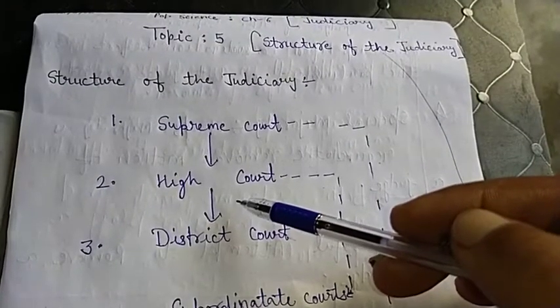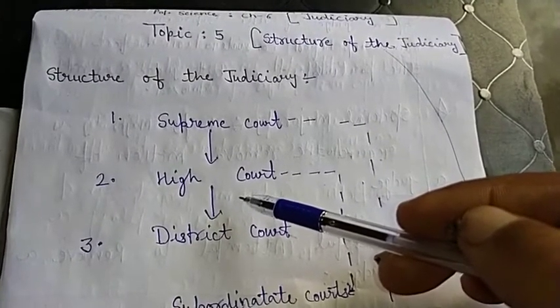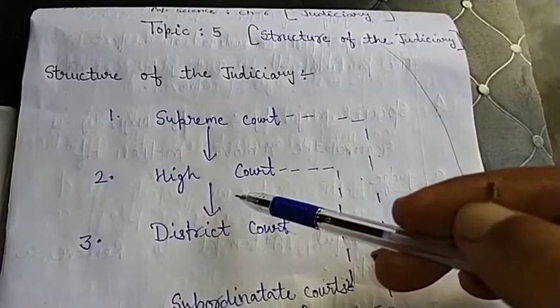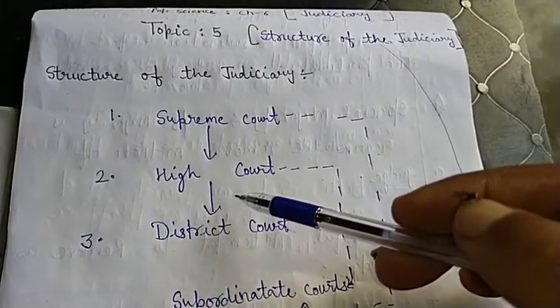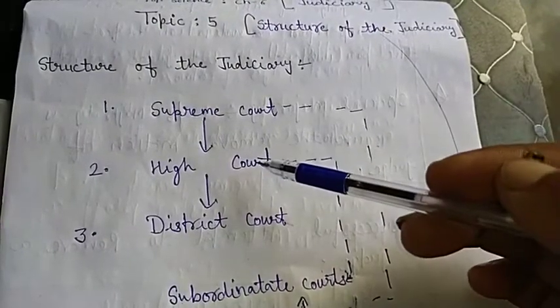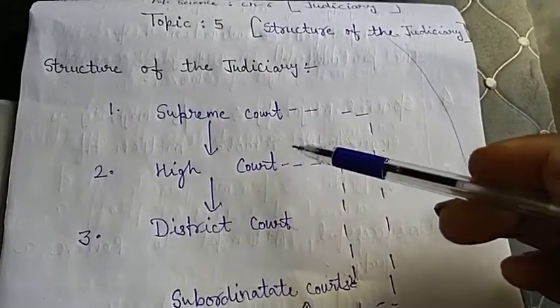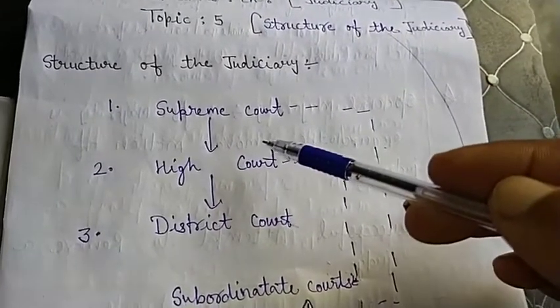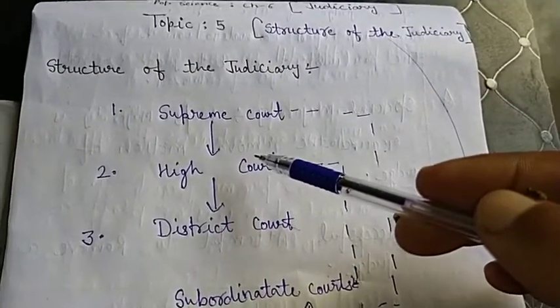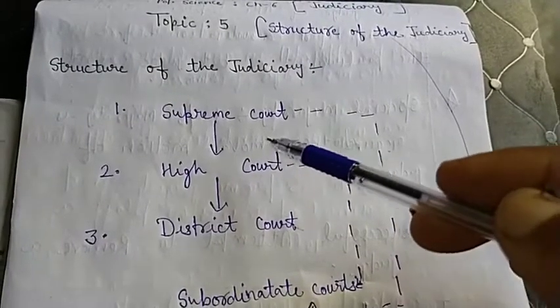This means that unlike some other federal countries of the world, India does not have separate state courts. In other federal countries, there are separate state courts, but in India, all the courts are related to each other and it is an integrated system.